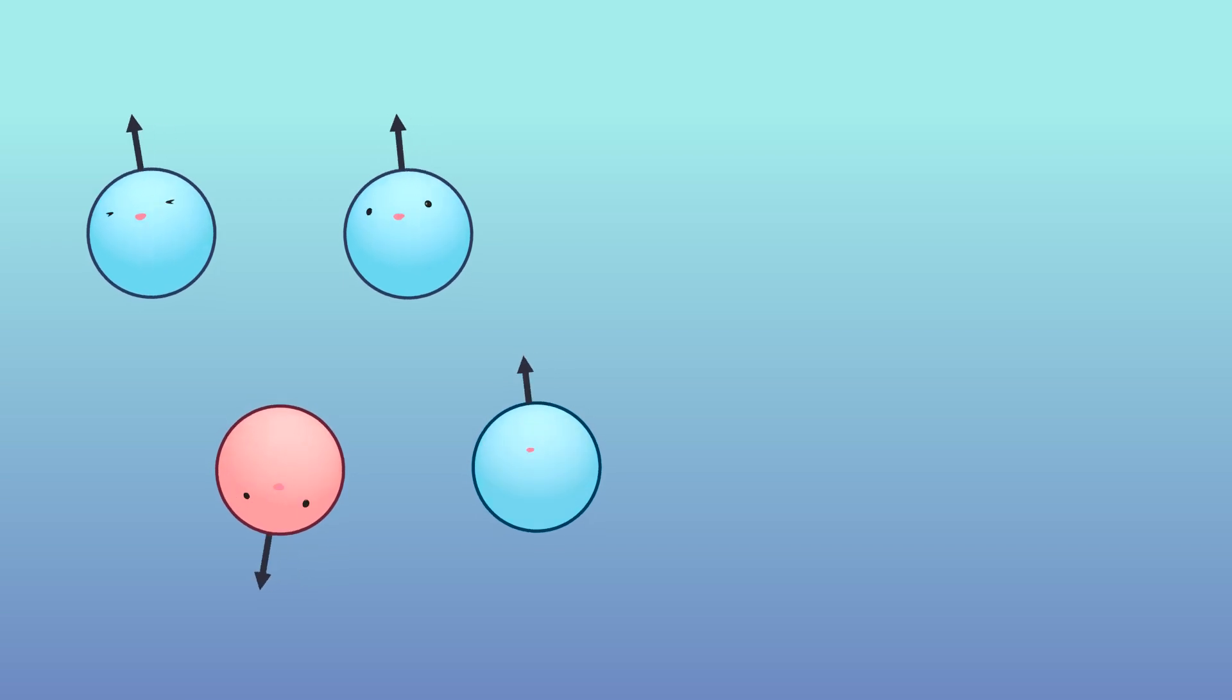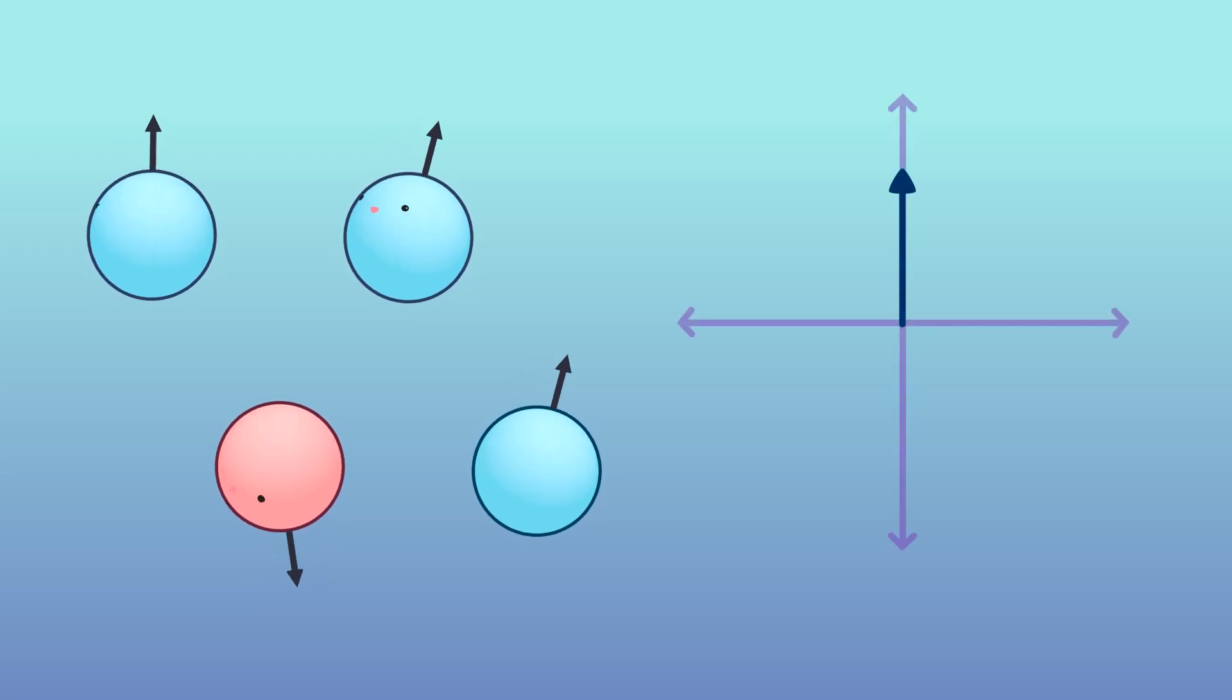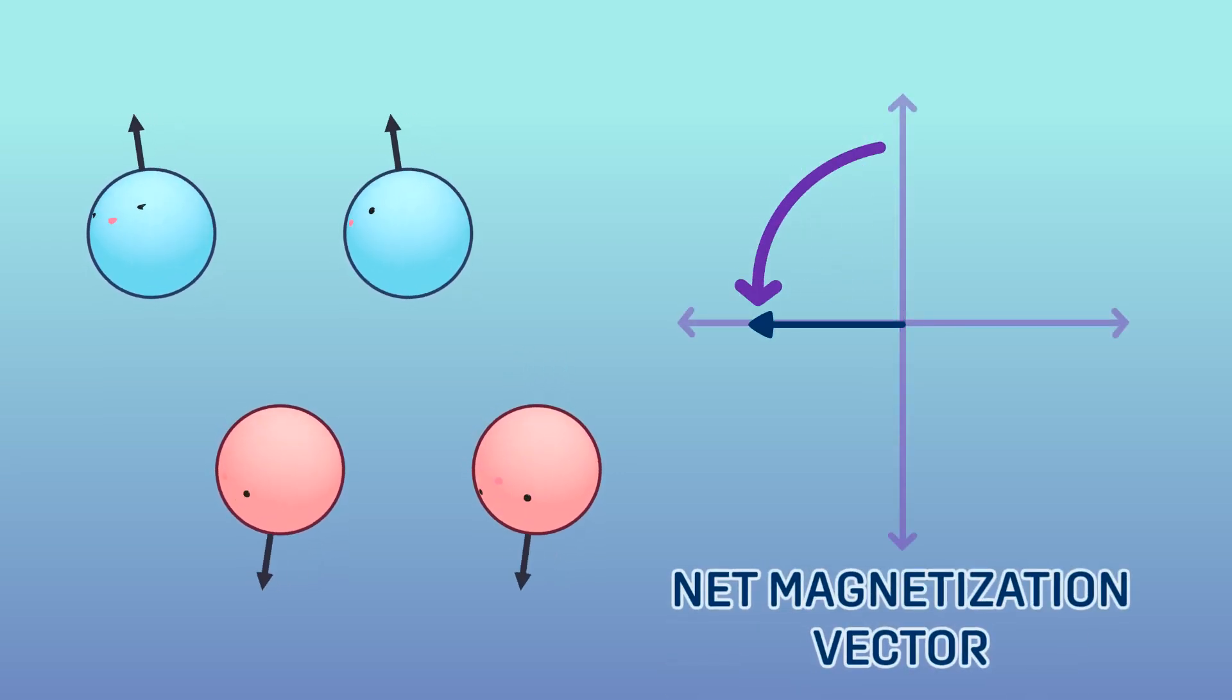Remember, the flip angle induced by an RF pulse depends on the strength and duration of the pulse. The thing being flipped is the net magnetization vector.